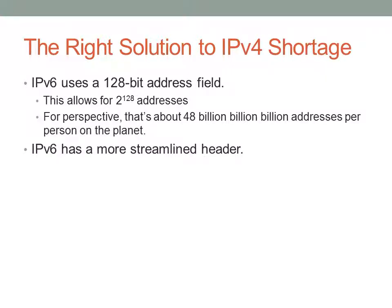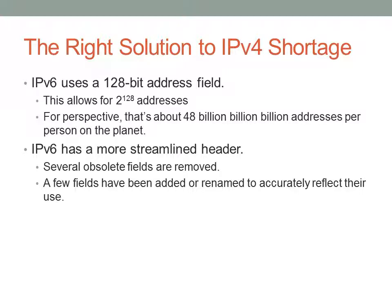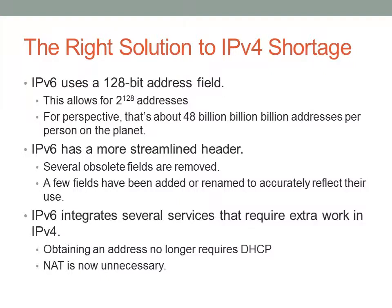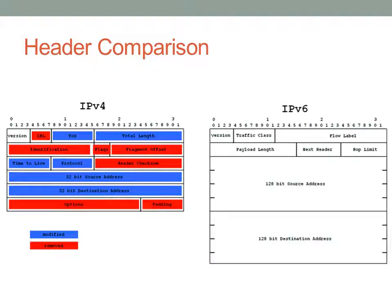IPv6 has a much more streamlined header as well. Even though the header itself is bigger in terms of bytes, it actually gets processed faster by the routers that receive it because it's more streamlined. There are several obsolete fields that are removed, and a few fields have been added or renamed to more accurately reflect their use. IPv6 also integrates several services that require extra work in IPv4 — for example, you don't need DHCP to get an address, you don't need NAT, and there are also some security features added.